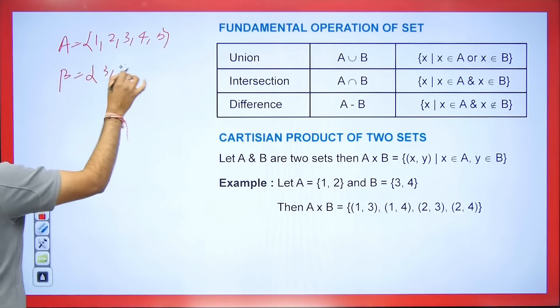Now we will talk about difference, A minus B. This means: from A, remove the elements of B. Elements of B are 3 and 4 — remove these from A. What is left? 1, 2, and 5. So A − B = {1, 2, 5}. Formally: A − B = {x : x ∈ A and x ∉ B}. If we remove all elements of B from A, what we get is the difference.